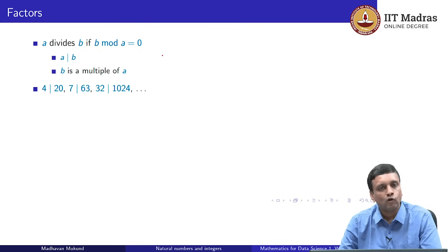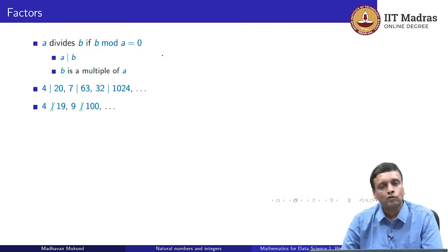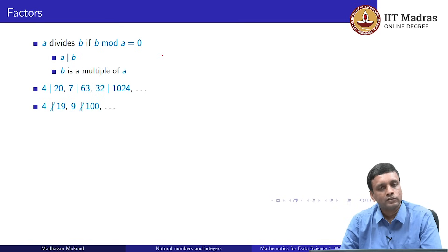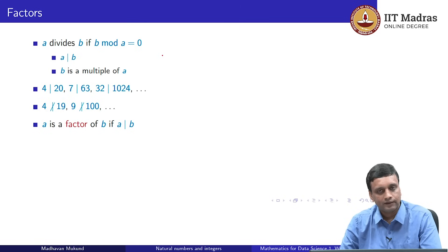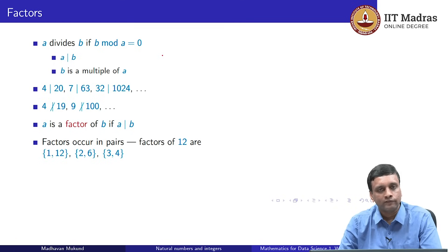Some examples: 4 divides 20 because 4 times 5 is 20; 7 divides 63 because 7 times 9 is 63; 32 divides 1024 because 32 times 32 is 1024. The symbol for not being a divisor is a stroke across the vertical bar. So 4 does not divide 19 because no integer times 4 equals 19. Similarly, 9 does not divide 100 evenly because 9 times 11 is 99 and 9 times 12 is 108. A is a factor of b if a divides b, and factors must come in pairs: if a divides b then a·k = b, so k is also a factor.